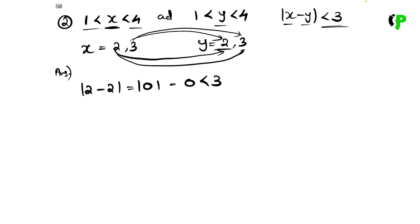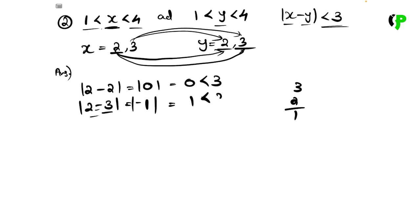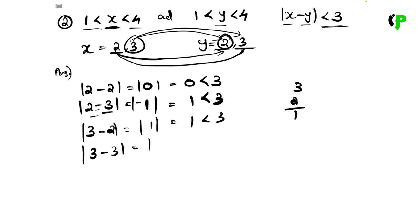Let's take another case. Let x equal 2 and y equal 3. By substituting, we get 3 minus 2 equals 1. The modulus gives us 1, which is less than 3. We have satisfied all these values.